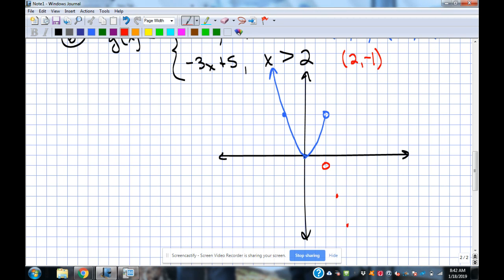I know I'm going to the right because my x values do what in the domain here? They go bigger, right? They're to the right of 2. So that's how I know that's the direction I need to go. And then, I draw that line. Fun stuff.